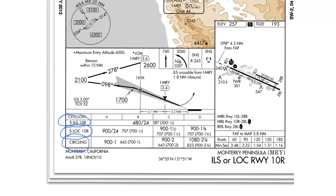We have the minimum descent height or descent altitude data and the minimum visibility required for the approach. We can always look directly to the type of approach to find the minimums for that approach. For the straight-in ILS to runway 1-0 right, your minimum decision height is 480 feet. What this means is that you cannot descend below 480 feet unless you have any required item in sight, such as runway lights, the runway environment, approach lights, etc.